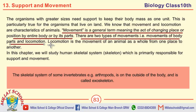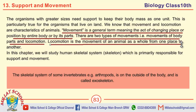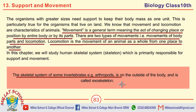Define locomotion: Locomotion is the movement of an animal as a whole from one place to another. Define exoskeleton: The skeletal system of some invertebrates, for example arthropods, is on the outside of the body and is called exoskeleton.